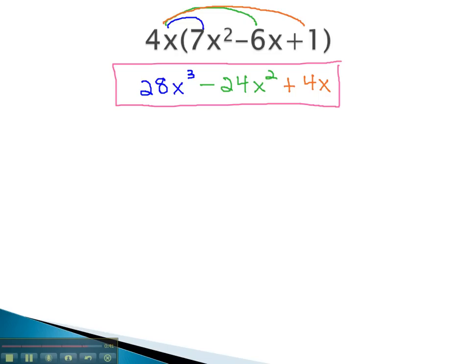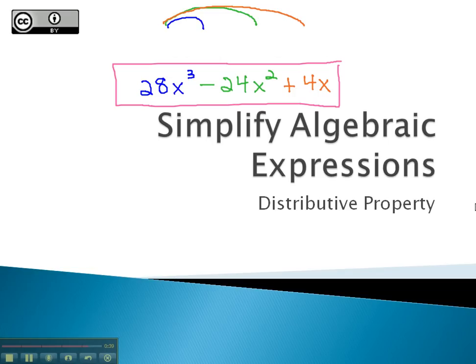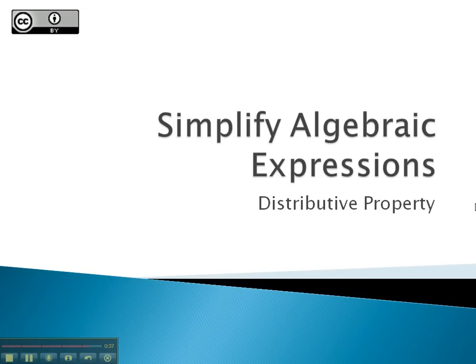By multiplying the front term through the parentheses, we can simplify many different algebraic expressions using the distributive property.